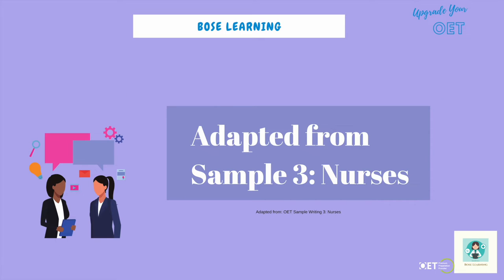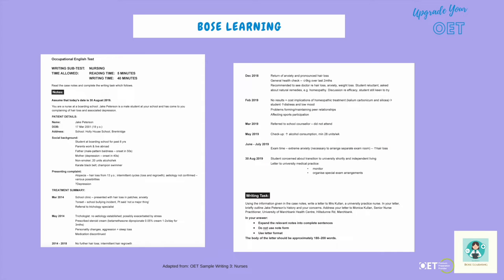Let's look at a case note and letter. We're going to use sample three from the OET website, which is for nurses, adapted slightly. You're a nurse, and Jake is one of the students at the school you work at who has come to see you complaining of hair loss and depression. He's 18 and we have all his case history. In the original, you have to write a letter to the university nurse — the nurse at the university Jake is going to after finishing boarding school.